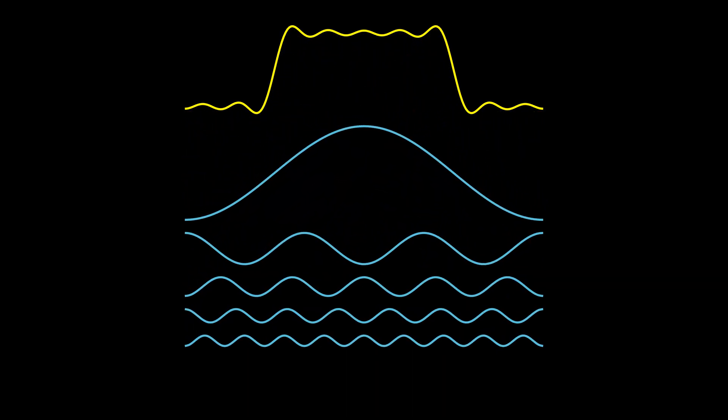But what if our signal isn't a simple sine wave? For example, this does not look like a sine wave. It turns out any signal can be broken down into a mix of sine waves with different frequencies. So to properly sample any signal, we only need to worry about the highest frequency component in it.